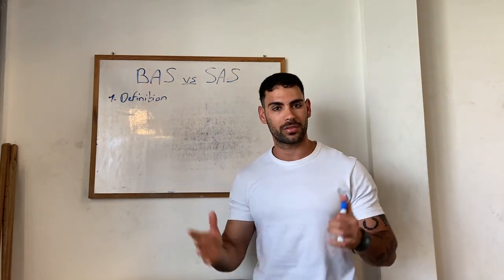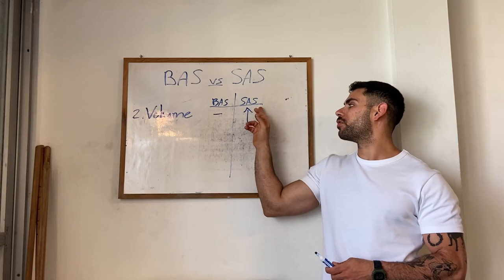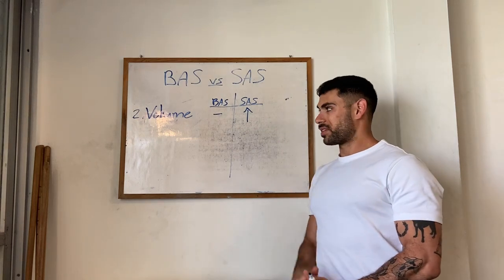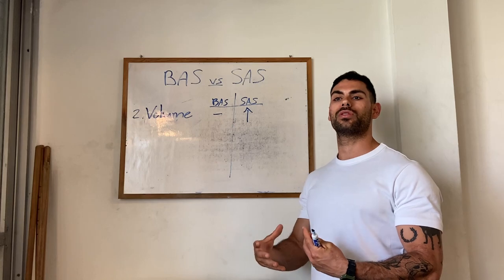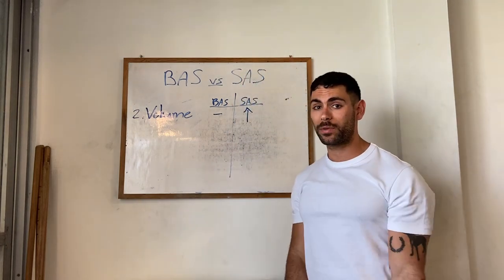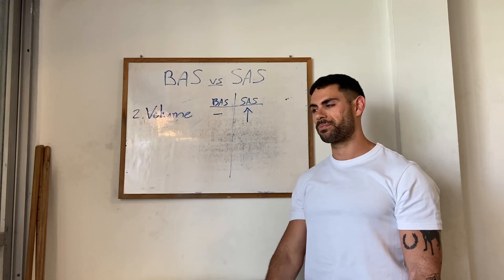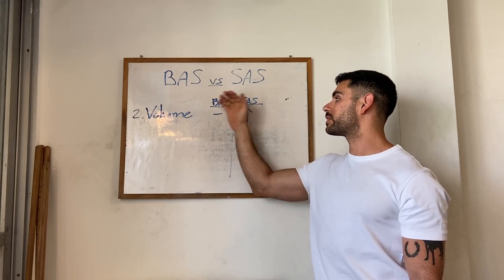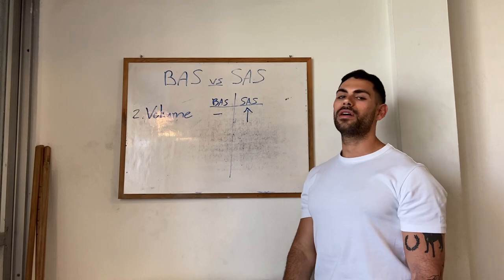The first training variable we will discuss is volume. We will generally perform more volume in a straight-arm skill relative to a bent-arm skill. There are two reasons. First, in a bent-arm equivalent exercise we will generally use more absolute weight — we've seen people perform dips with 100 kg on top of them, and even full planche push-ups with 50 kg on the center of mass. The absolute intensity is higher in the bent-arm movement and lower in the straight-arm skills.